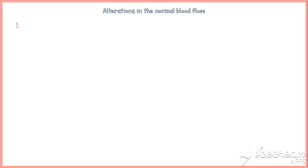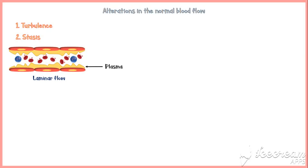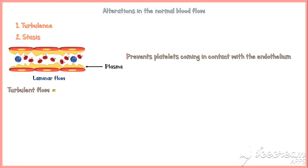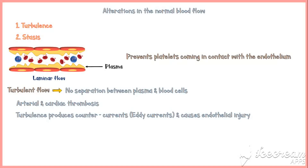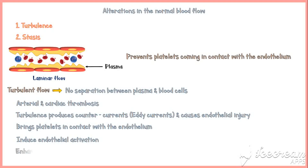Alterations in the normal blood flow could be either turbulence or stasis. Normal blood has a laminar flow, meaning plasma flows in the periphery and formed elements including blood cells and platelets flow centrally, preventing platelets from coming in contact with the endothelium. When the blood flow becomes turbulent, this laminar flow is disrupted. Turbulent flow commonly contributes to arterial and cardiac thrombi. Turbulence produces counter-currents (eddy currents), causes endothelial injury, brings platelets into contact with the endothelium, and ultimately leads to thrombosis.